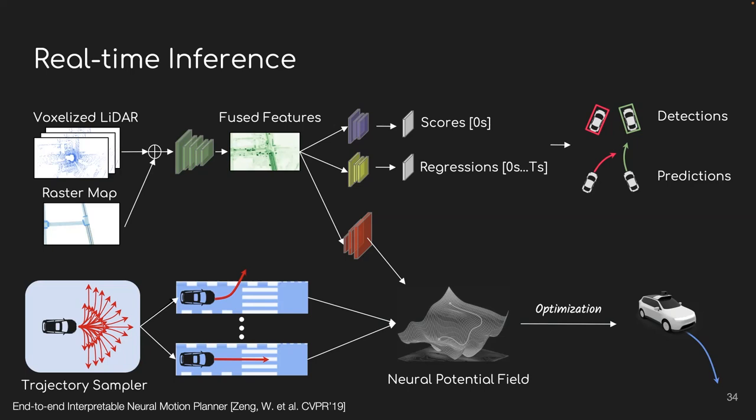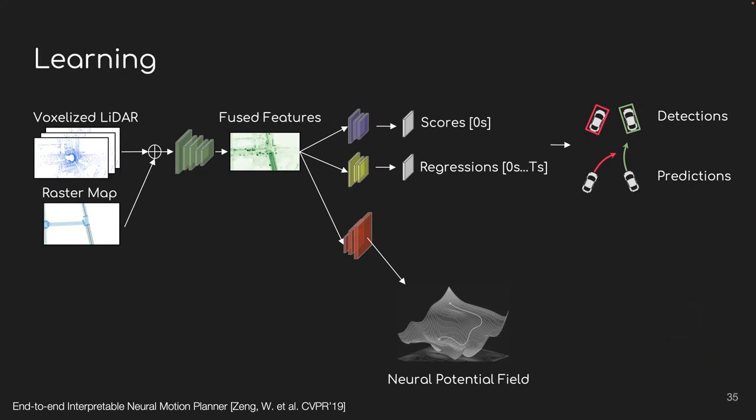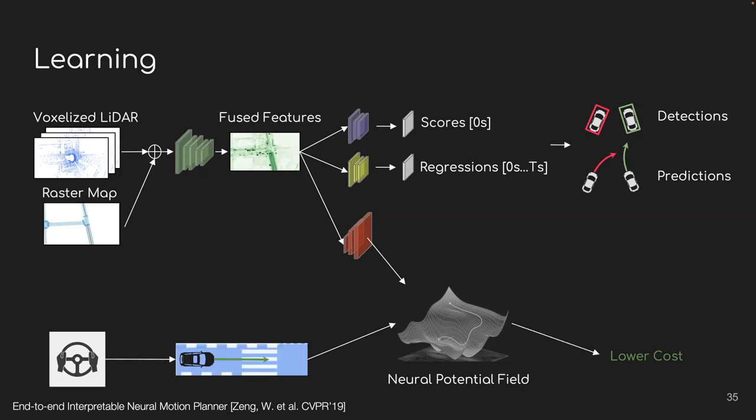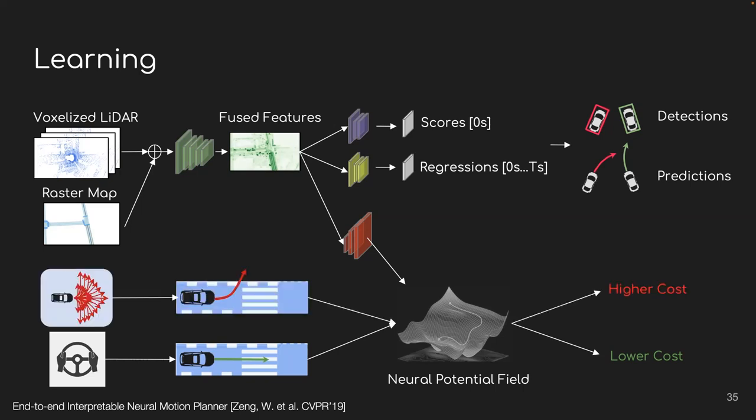Therefore, this neural potential field allows us to evaluate arbitrary trajectories. And in order to find the best planning decisions, we exploit a sampling-based optimization process. Basically, we first sample a wide variety of trajectories and then select the one with the minimum cost. Importantly, all computations from the raw sensor data to the final driving command can be done in a few milliseconds. However, there's no label for such a neural potential field, so how to learn it becomes a real challenge. To tackle this, we follow the intuition that human driver would always choose good trajectories.